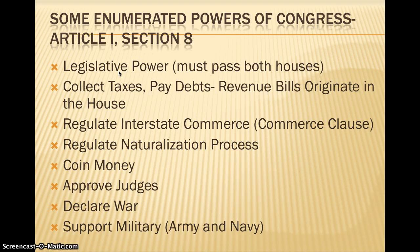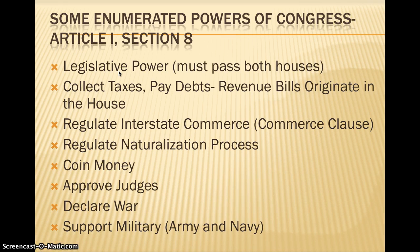Congress can regulate the naturalization process — the process whereby people become citizens of the United States. Congress can coin money and approve judges to the federal judiciary that deals with federal law. Congress also has the power to declare war and the mandate to support the military. Even though the president is commander in chief, Congress still has a responsibility for funding the military and therefore has something to say about foreign policy and military policy.